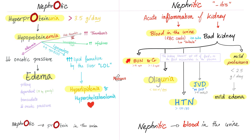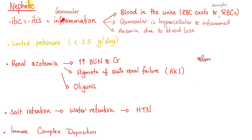End-stage renal disease leaves you with only one of two options: dialysis or transplant. In nephritic syndrome, the kidney is bleeding. How do we know the blood is coming from the kidney? You will see red blood cell casts and dysmorphic red blood cells in the urine, proving it is the kidney's fault — not the ureters, not the bladder, not the urethra.